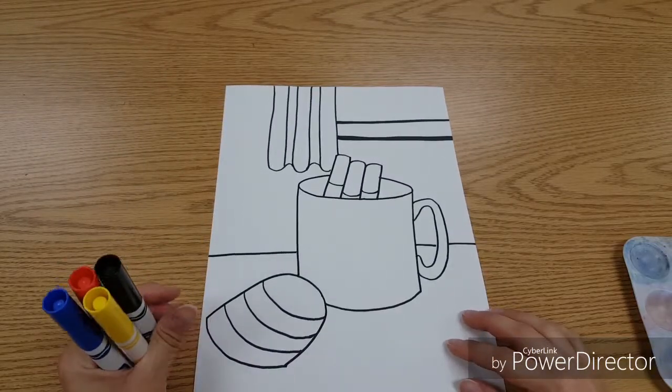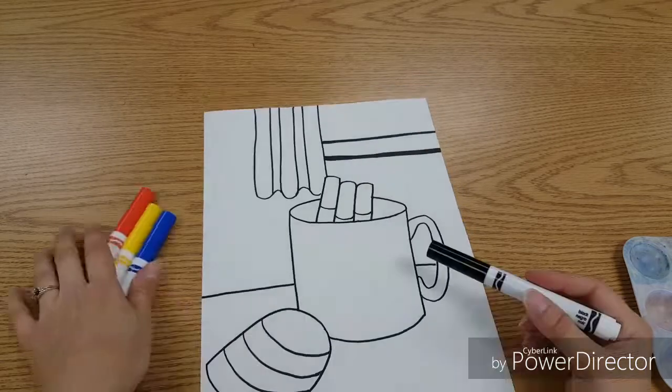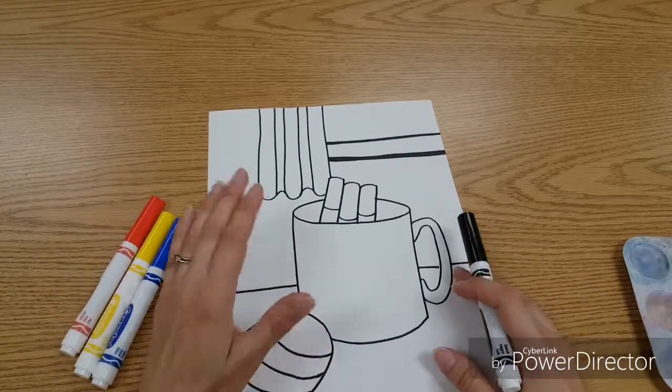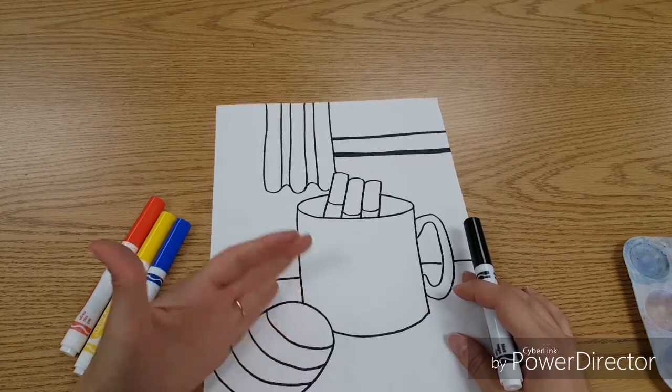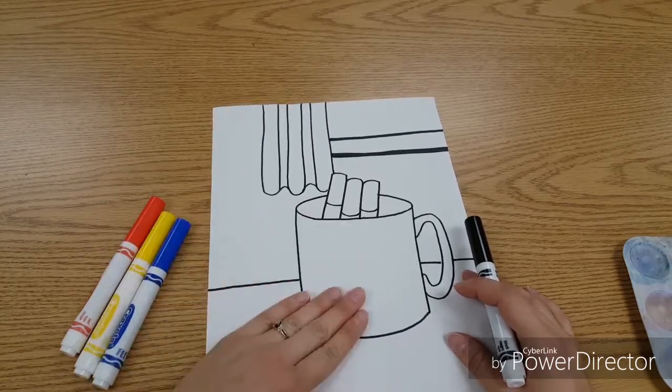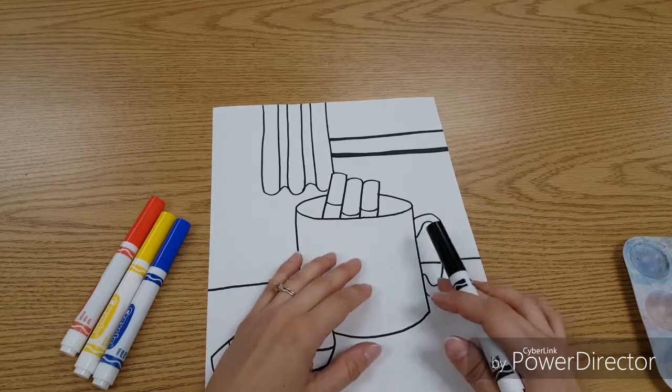For the second part of our Roy Lichtenstein inspired still life, we're going to add our color. When he added the color, he didn't fill in everything. Some things stayed white, some things got color, and other things got stripes or dots.